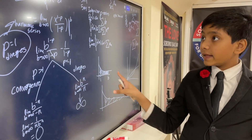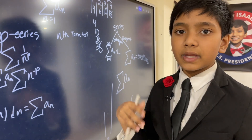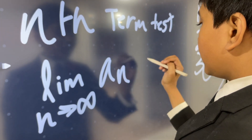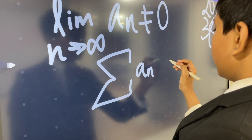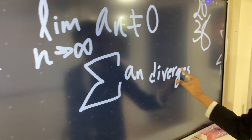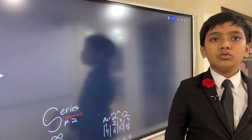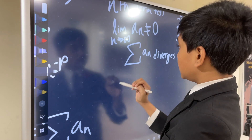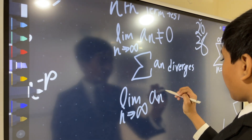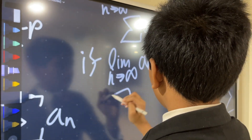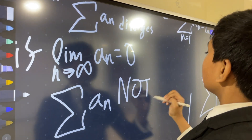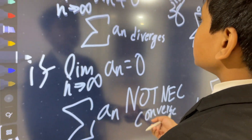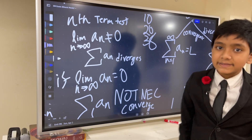Now the n-th term test: if the limit as n approaches infinity of the sequence a_n is not equal to zero, then the series sigma a_n diverges — because we'd be adding a finite nonzero number infinitely many times, reaching infinity. However, this does not mean that if the limit equals zero, sigma a_n necessarily converges — it can still diverge. We're only saying that if the limit is not zero, it must diverge.